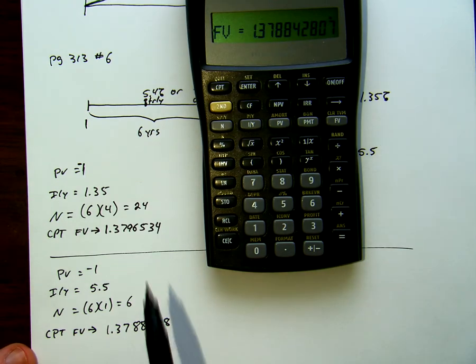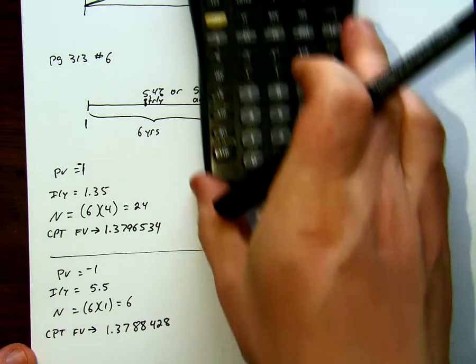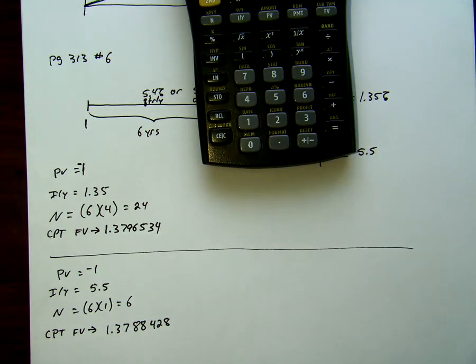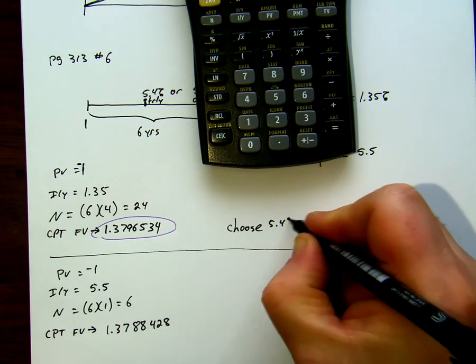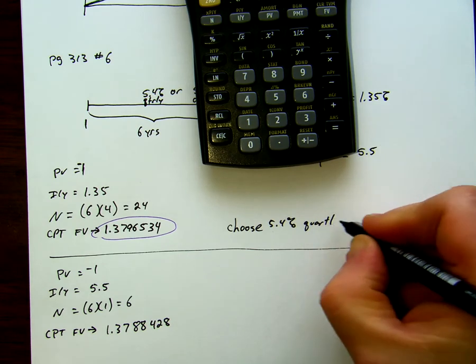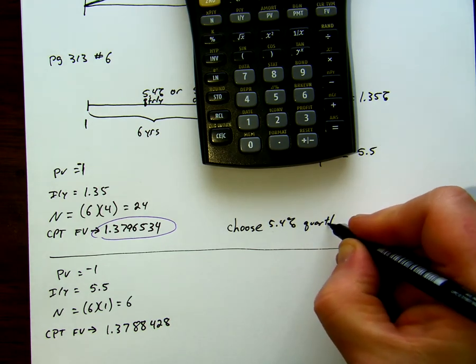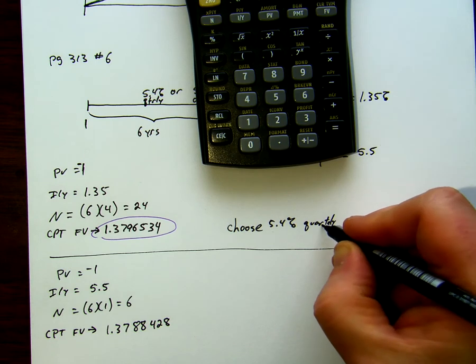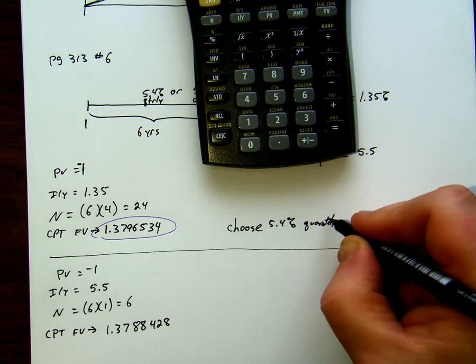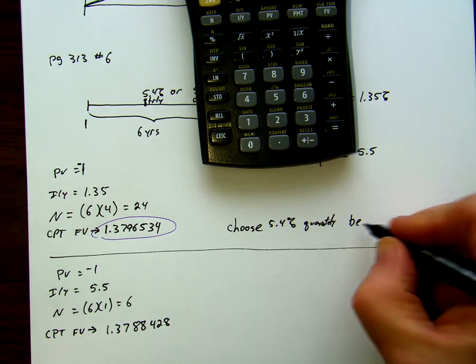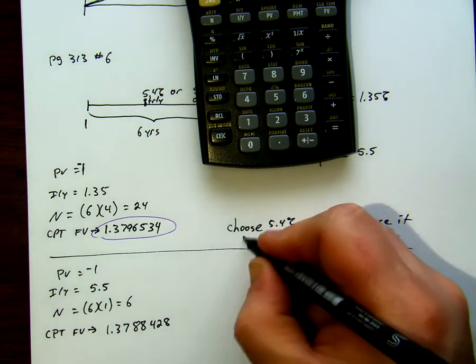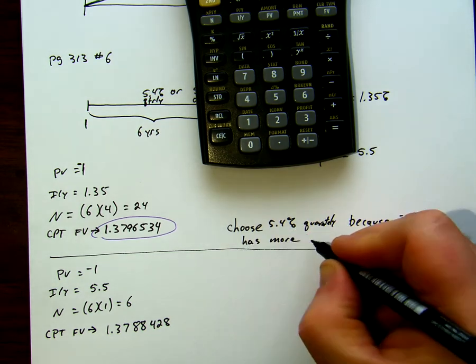So, we're going to compare 1.3788 to 1.3796. 1.3796 is greater. This has more compound growth. So, choose 5.4% quarterly, because it has more compound growth.